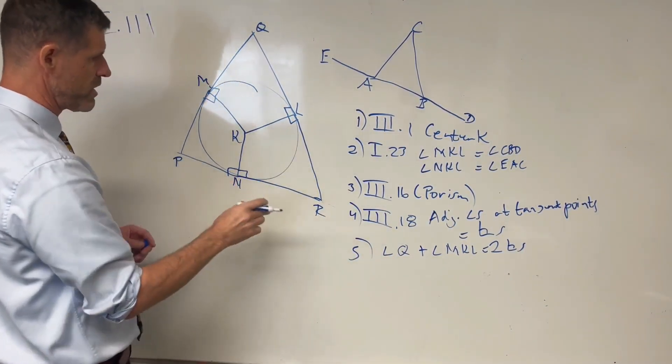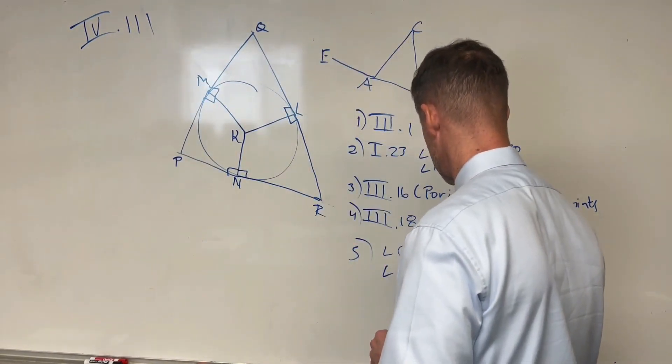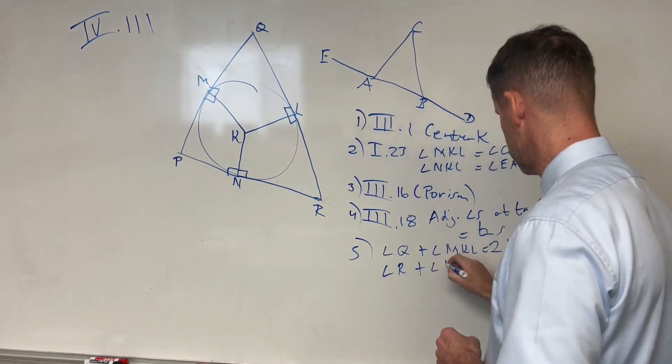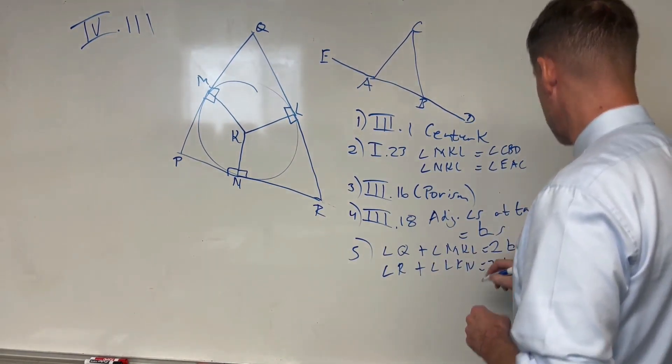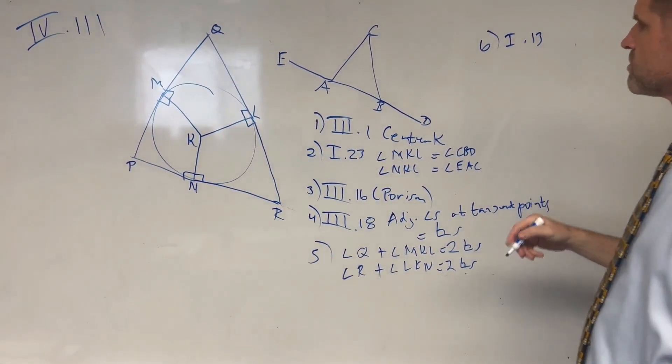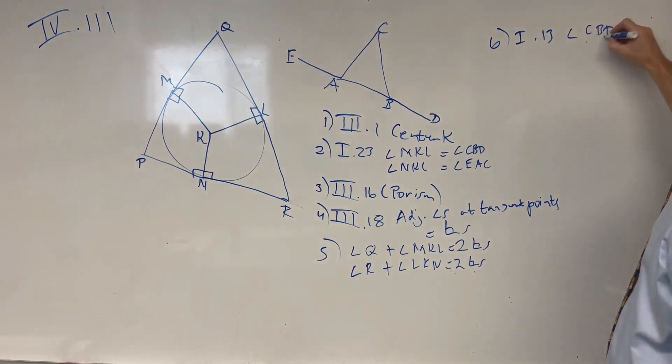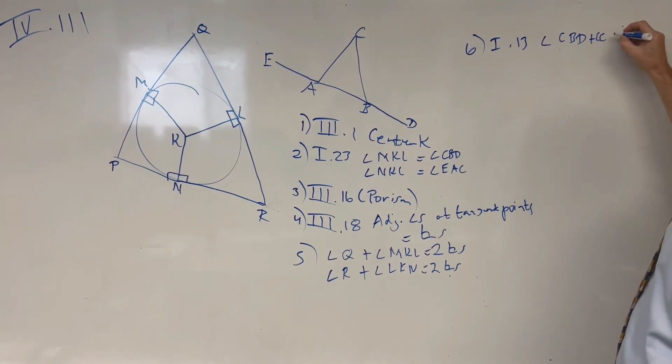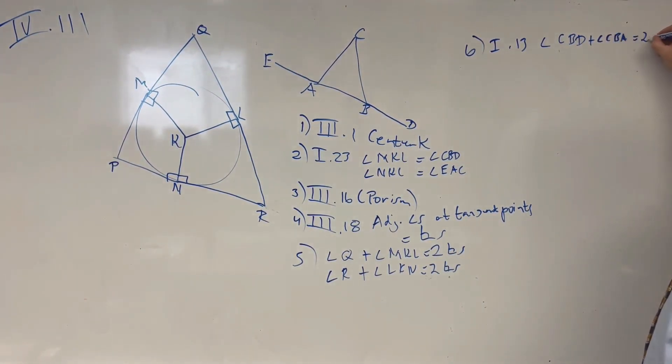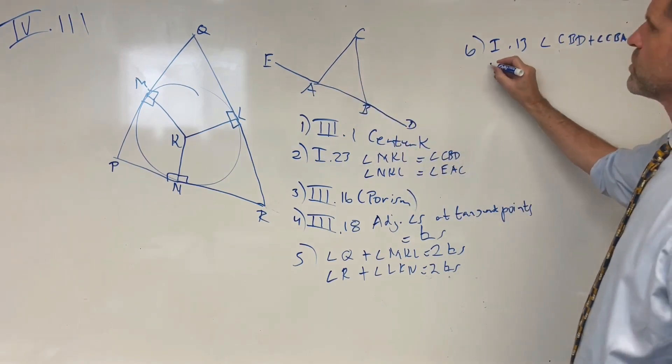And then, I'll keep this in the same step, using the same line of reasoning, we can show that the angle at R plus angle LKN equal two right angles. And we know from Proposition 13 of Book 1 that the angles CBD and CBA are equal to two right angles. And likewise, Proposition 13 again, the angle EAC and CAB are also equal to two right angles.